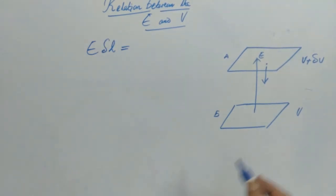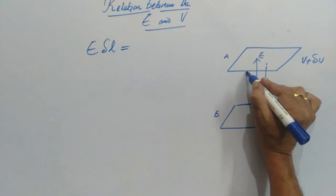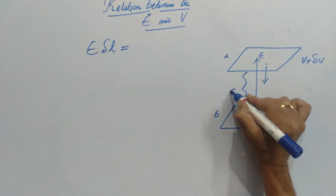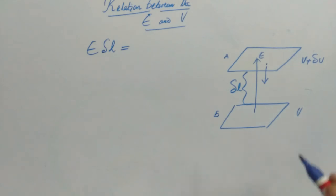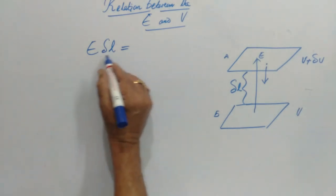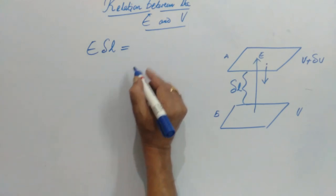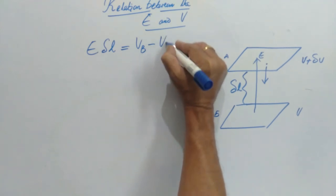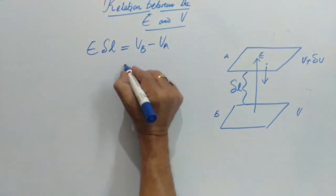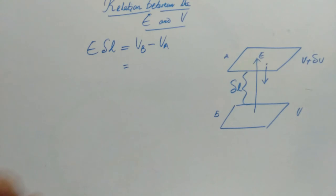This E times delta L, where delta L is the perpendicular distance from A to B. Therefore, E times delta L must be equal to VB minus VA, according to the definition of the potential difference we have studied already.